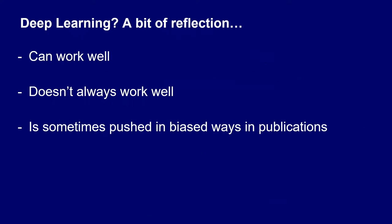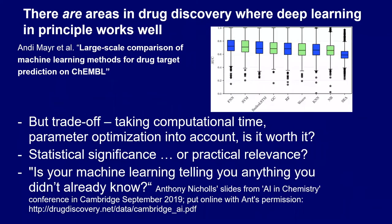A few comments on deep learning applied in pharmaceutical companies. In areas with lots of homogeneous data, such as target prediction — predicting the protein target for a small molecule — neural networks do perform a little better than support vector machines. However, in a company you need to retrain models, so it may or may not be worth a numerically slightly better performance. For some endpoints like physical-chemical properties, multi-task neural networks outperform previous PLS models.